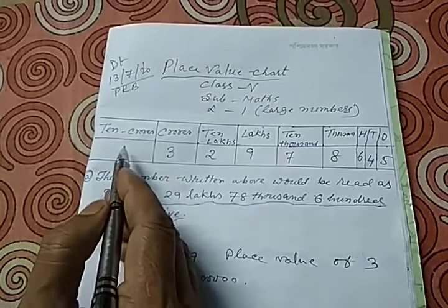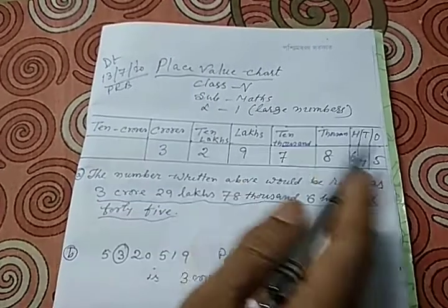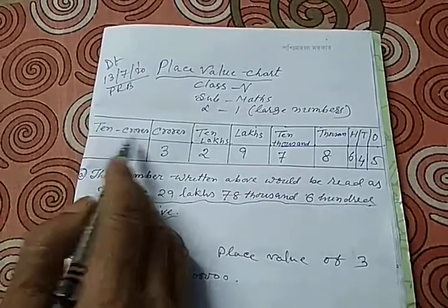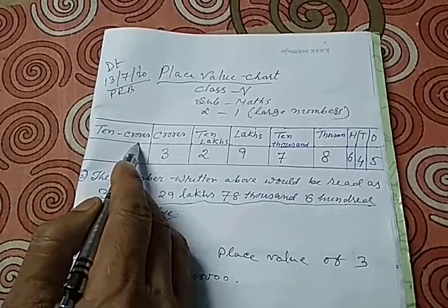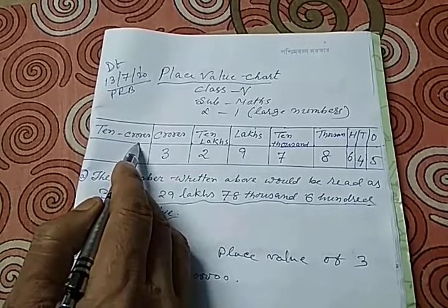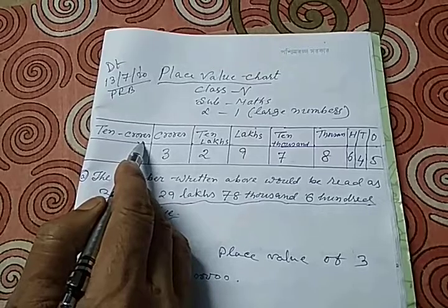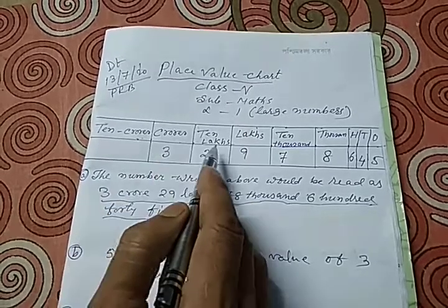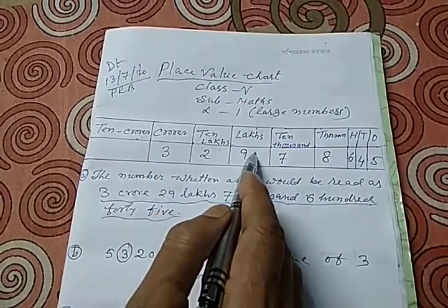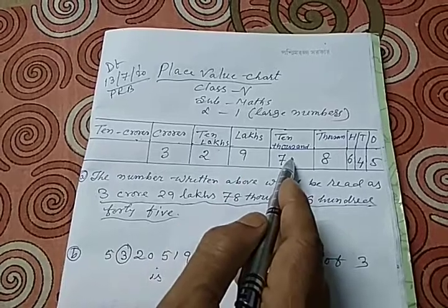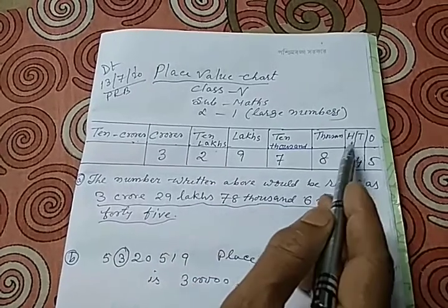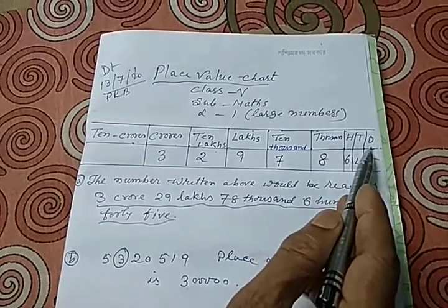I have drawn a place value chart. This is 10 crore place, because you are dealing with large numbers. So I have started from 10 crore place. This is crores, this is 10 lakh place, this is lakhs place, this is 10,000 place, this is thousand place, this is hundred place, this is 10 place, and this is one place.